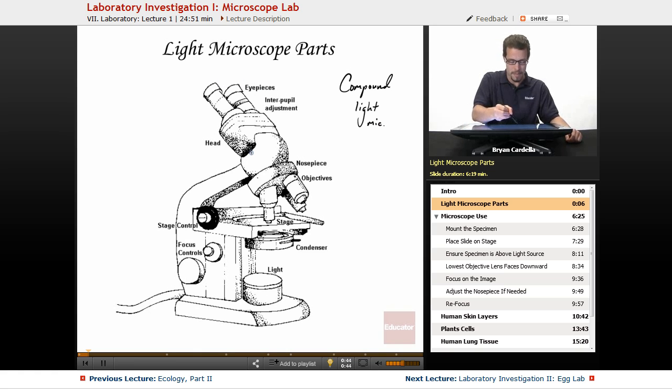So if we start from the top going down, you look into the eyepieces. Sometimes there's one, so you would close one eye and look in with the other. Sometimes there's two. Oftentimes there's this interpupil adjustment, meaning you can adjust the eyepieces. Sometimes you can spread them farther apart or closer together. You can also rotate the little edge of the eyepiece, which is a minor focusing. Now the eyepieces by themselves is times ten. So if you just have the eyepieces and you're looking at something, you're magnifying that object ten times.